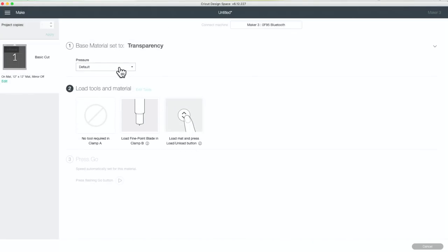Now I want to increase the pressure to more. So as you may see, it's telling me to load my fine point blade and clamp B, and it doesn't give me the options to change the blade setting. I am going to go ahead and just put my deep point blade in the machine, even though it's saying fine point blade, so that we can get a great cut with this reusable stencil. You might be thinking, how is this going to work? How am I going to trick my machine into thinking that it has a fine point blade, but it really has the deep point blade.